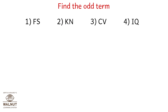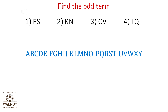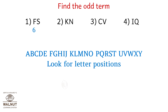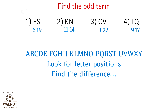Find the odd term. The series is given below. Look for letter positions: F is 6, S is 19, K is 11, N is 14, C is 3, V is 22, I is 9, Q is 17. Let's find the differences: between 6 and 19 is 13; 11 and 14 is 3; 3 and 22 is 19; 9 and 17 is 8.